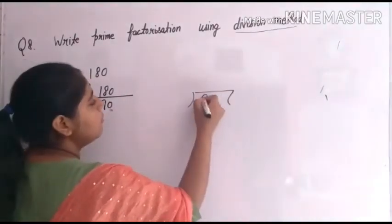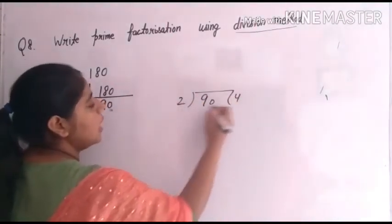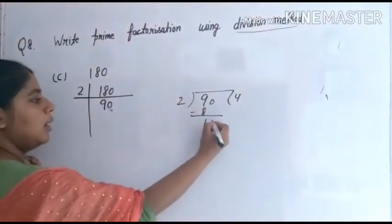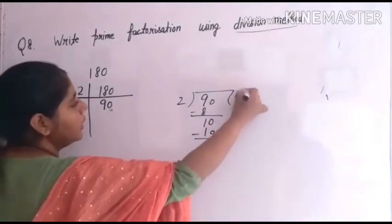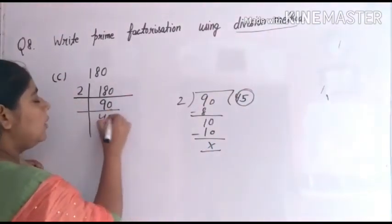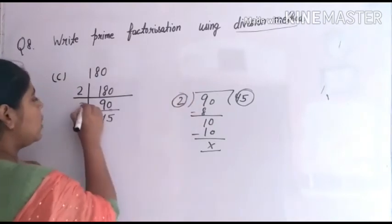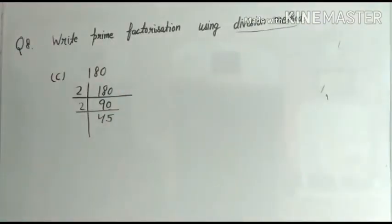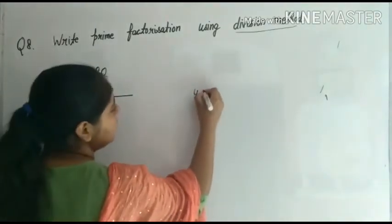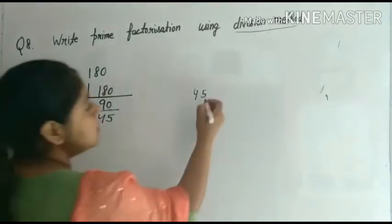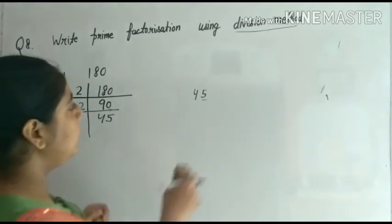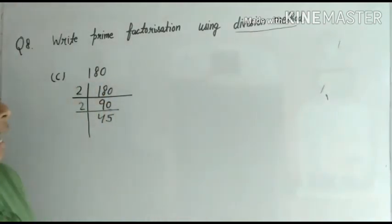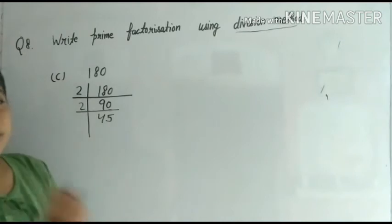Ninety — let's divide it by two. Two fours are eight; nine minus eight is one. Two fives are ten; ten minus ten is zero. Quotient is 45, divisor is two, written here. Now, children — 45: from zero, two, four, six, eight, none appears in 45. It means 45 is not divisible by two. So find the smallest number that exactly divides 45.